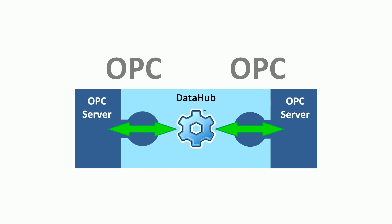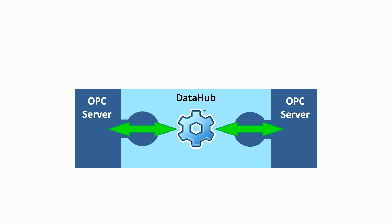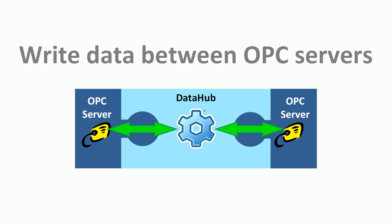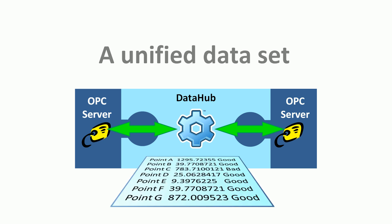The Cogent DataHub connects simultaneously to two or more OPC servers. This lets you write data from one OPC server to another. The DataHub gathers data from all OPC servers and stores it as a unified data set. All data is then available to any OPC client.